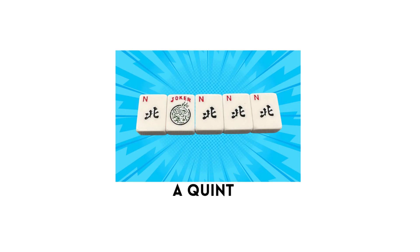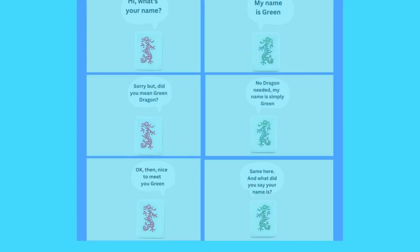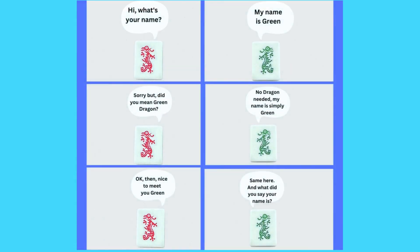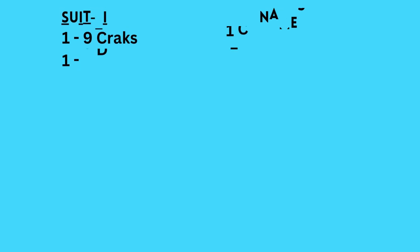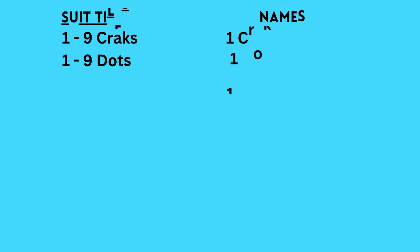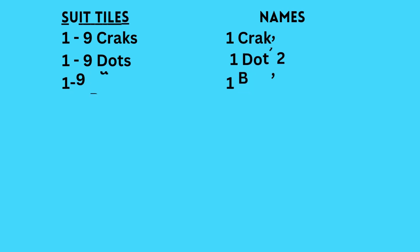Finally, we move on to tile naming. At this point, I'd like you to pause the video so you could read the cartoon. In America, we've changed the names of the tiles a bit. And since this is a pick-and-discard game, you must, in American Mahjong, name the tile when it is discarded. So let's talk about the suit tiles. The cracks, dots, and bams are named by their number and their symbol.